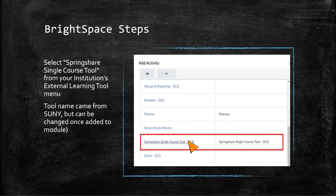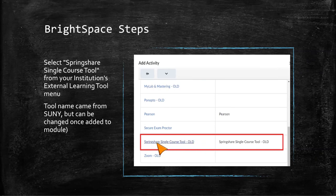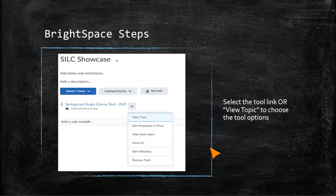I'm not thrilled with the name as SUNY Online set it up — it shows as a general name with 'OLD' for Old Westbury. But the good news is you can rename it once it's added, to something that makes more sense. That renaming process is part of my instructions on how to do it.